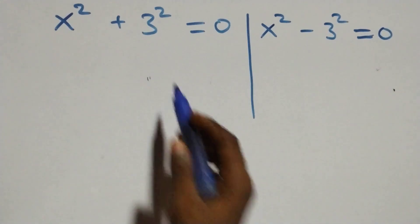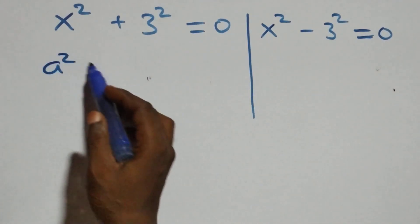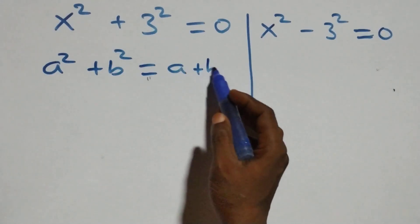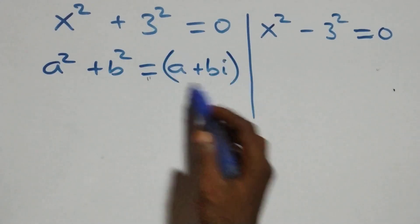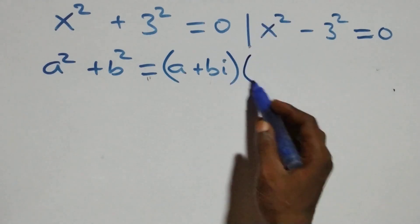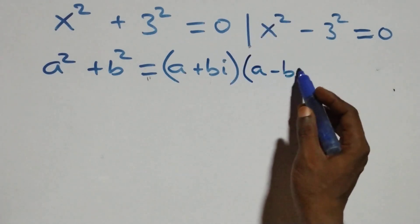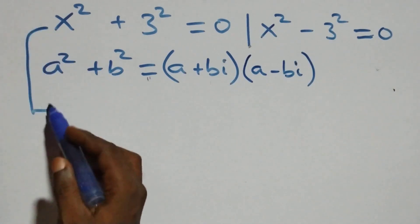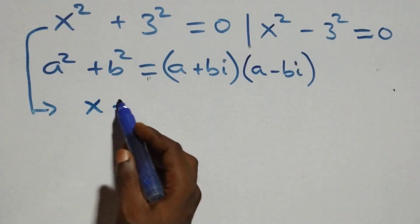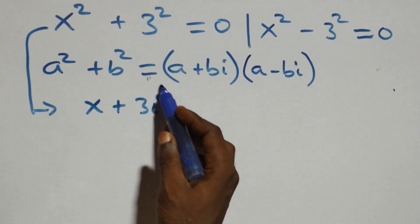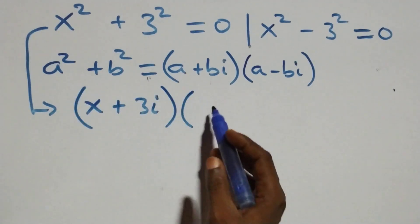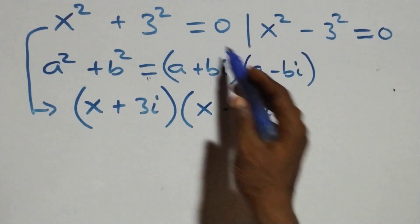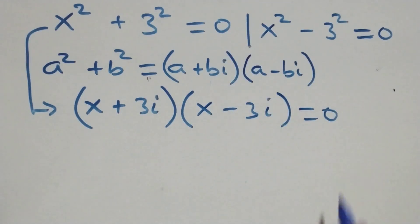Solving the first case, we use the identity a squared plus b squared equals (a + bi)(a - bi). So x squared plus three squared becomes (x + 3i)(x - 3i) equals zero.